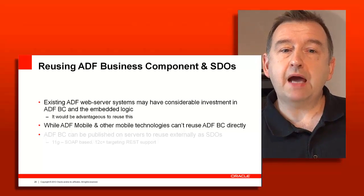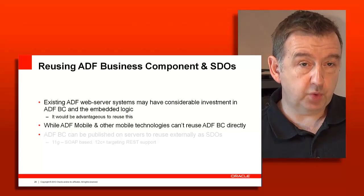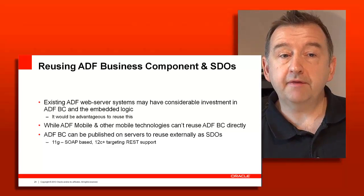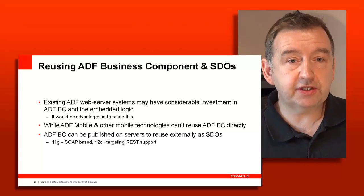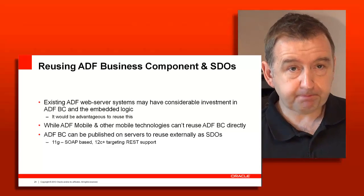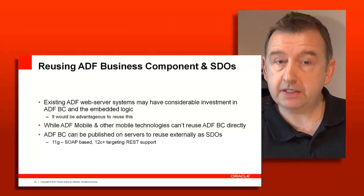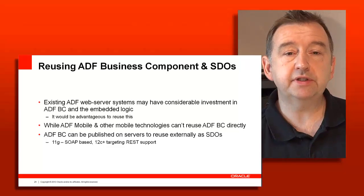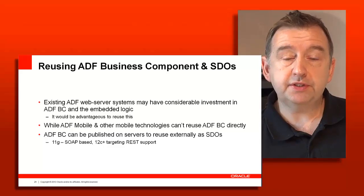An ADF Business Components application module typically represents an app use case, and that AM can very easily be deployed and exposed as a web service in JDeveloper and ADF. If you want to expose an AM as a SOAP service, you simply take the application module, define which view objects and methods you want to expose, and it will automatically be deployed as a SOAP web service by JDeveloper — something we support in JDeveloper and ADF 11g. For the 12c code line in ADF, we are looking at adding more complete support for AMs as REST services. For the 11g release, you can still expose AMs as RESTful services, but you have to do a little more hand coding. There is a white paper dedicated to this topic, as well as technical videos, with links posted at the end of this video.